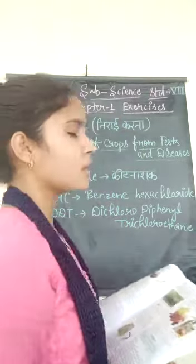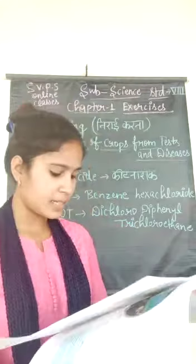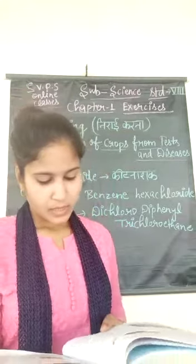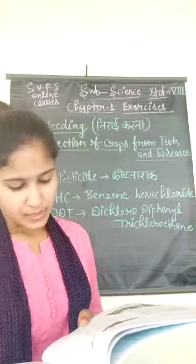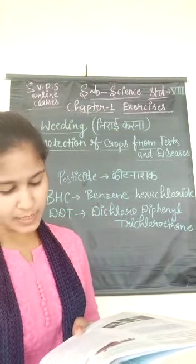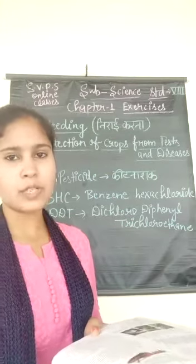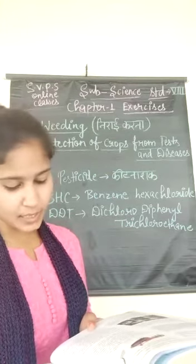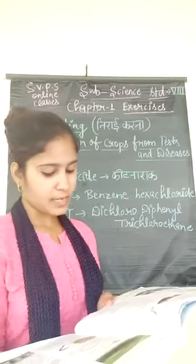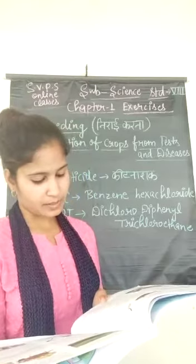These are some common pesticides that are sprayed. Examples of rodenticides are warfarin, zinc phosphate, etc. Fungicides are used to kill fungi.